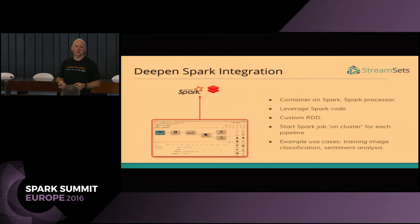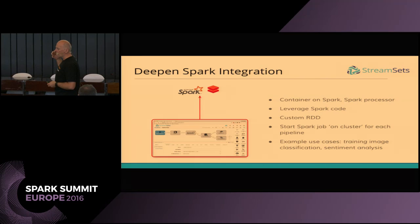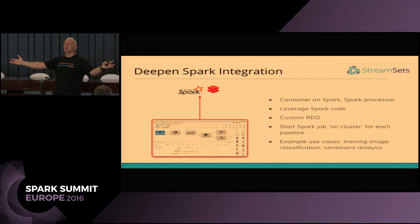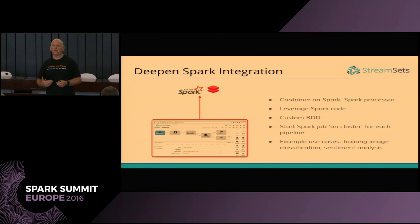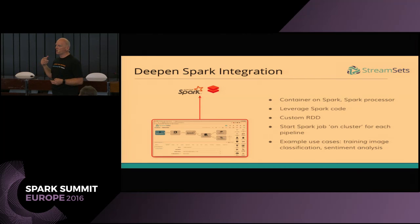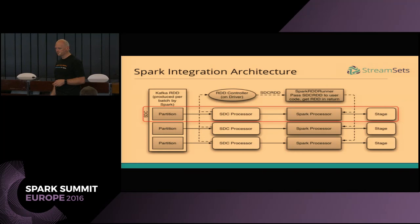It's almost orthogonal — running on Spark and then running Spark within a pipeline. We're going to bring them together to run the whole container on Spark and allow you to drop your code into the middle. This is quite a deep integration. We're leveraging a custom RDD, and instead of starting a Spark job for each batch, we start the Spark job for the entire pipeline across time. Now you get more of the benefits of Spark — working on RDDs across the whole stream of data, and the ability to do iterative jobs such as training your image classification and sentiment analysis models.